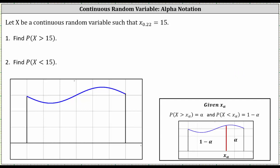If we think of this in terms of area under the probability density function, if we are given x sub alpha, then the area to the right of x sub alpha is equal to alpha, and the area to the left of x sub alpha is one minus alpha.